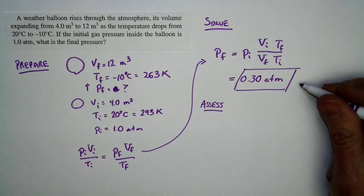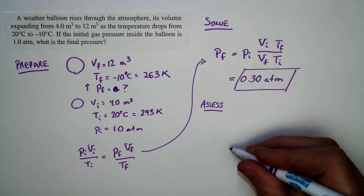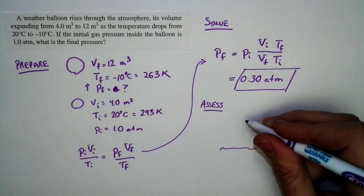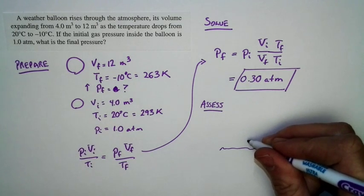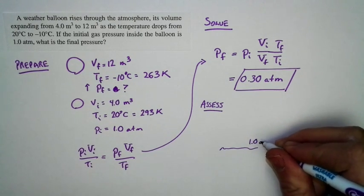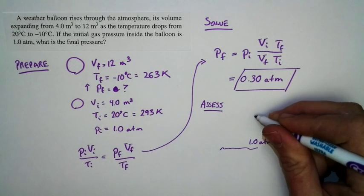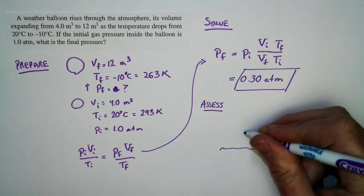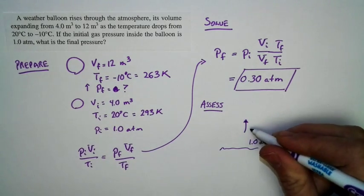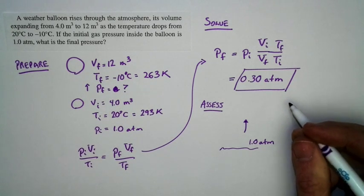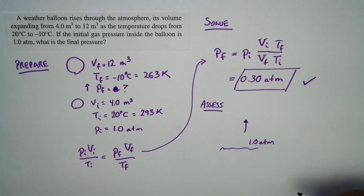And then also, as the balloon rises, we know that it's rising to higher levels of the atmosphere. We expect the pressure to be lower. Pressure is higher near the surface. It's 1.0 atmospheres at the surface. It's lower further up. So we expect as the balloon rises, it goes to a region of decreasing pressure. That's in fact what we find. And so our answer matches with the way we know the world works.